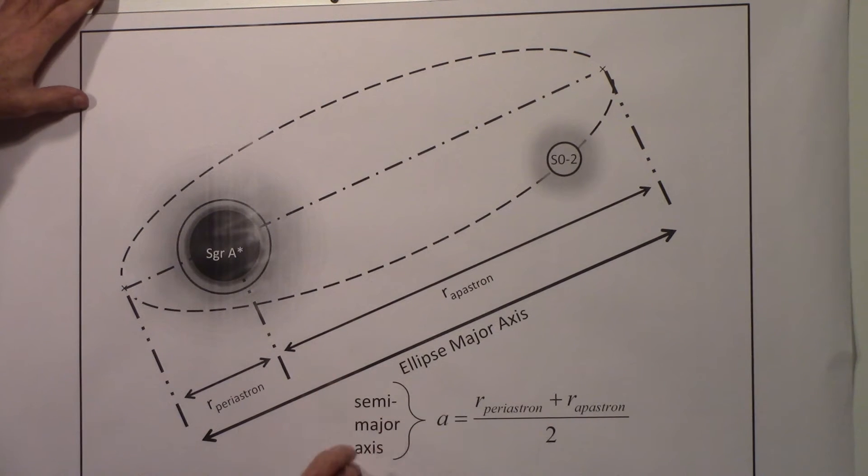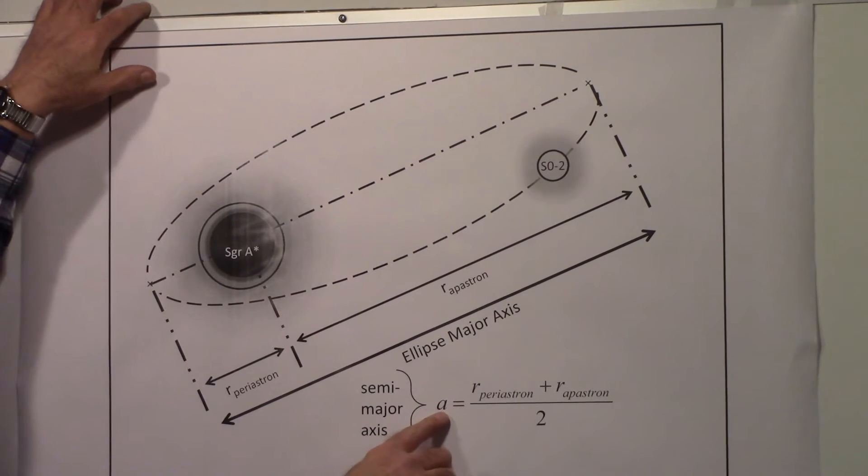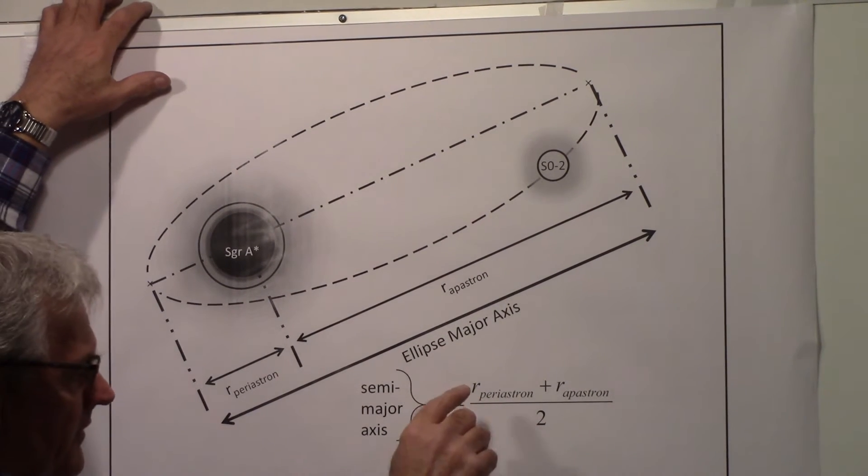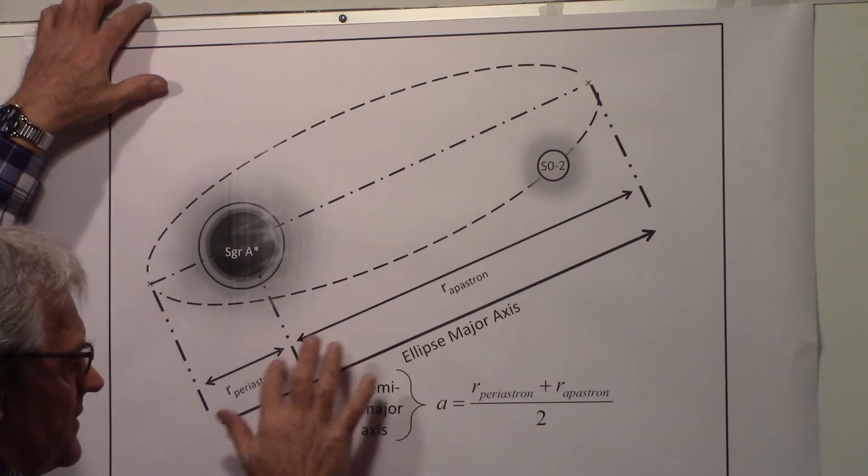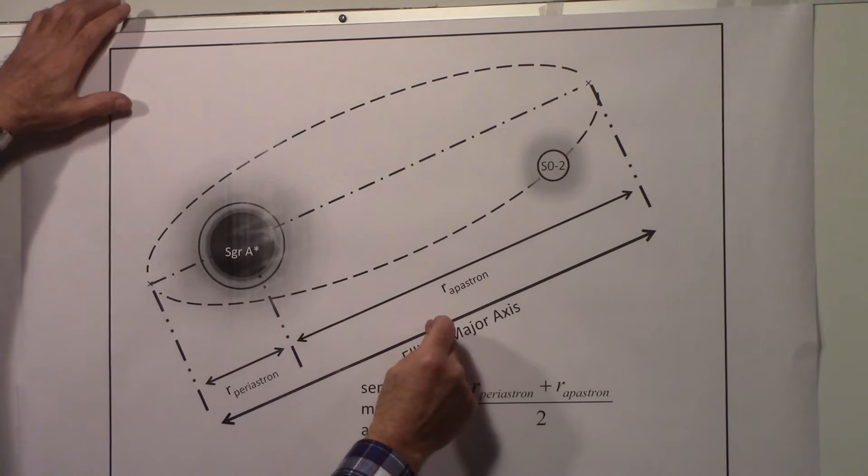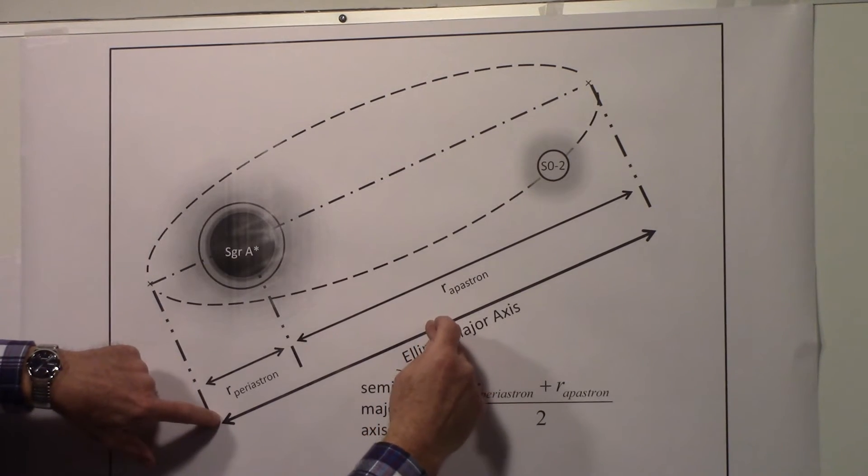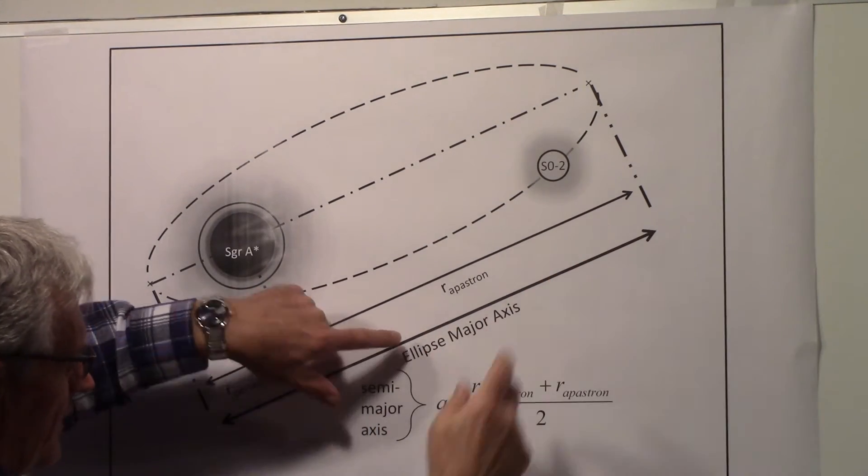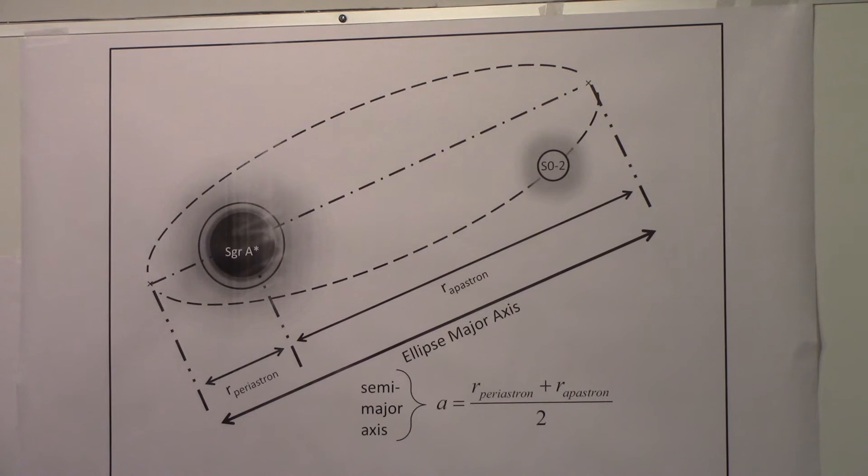What we're going to need is the semi-major axis. The semi-major axis we denote by a, and it's equal to these two distances divided by two. This point here, that's the semi-major axis.